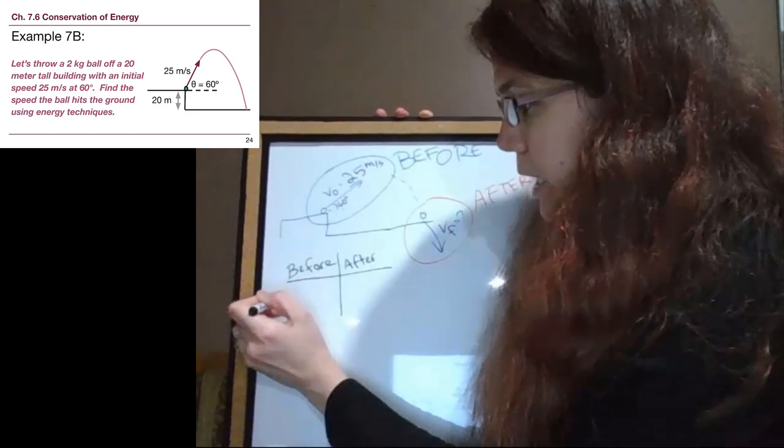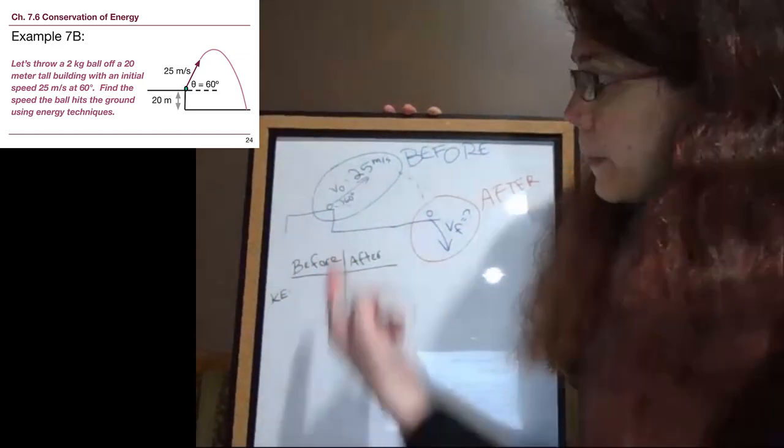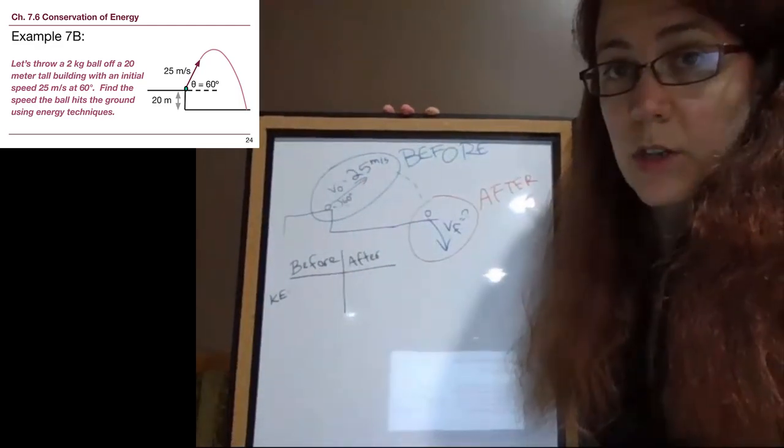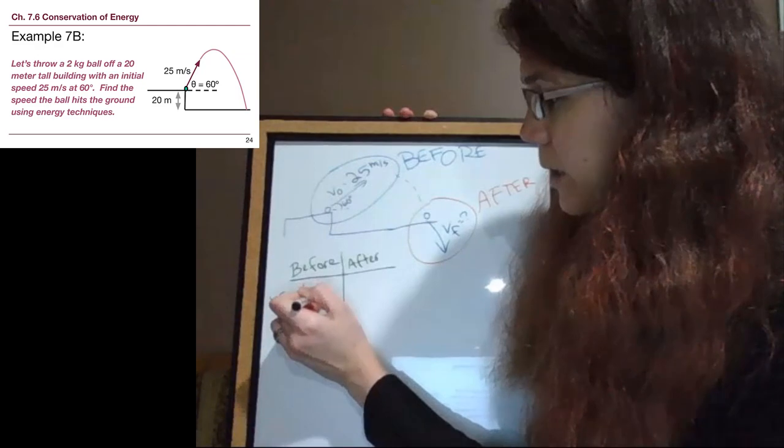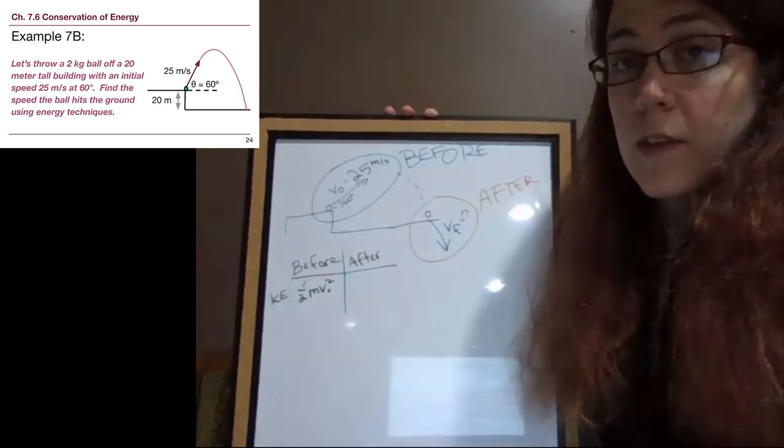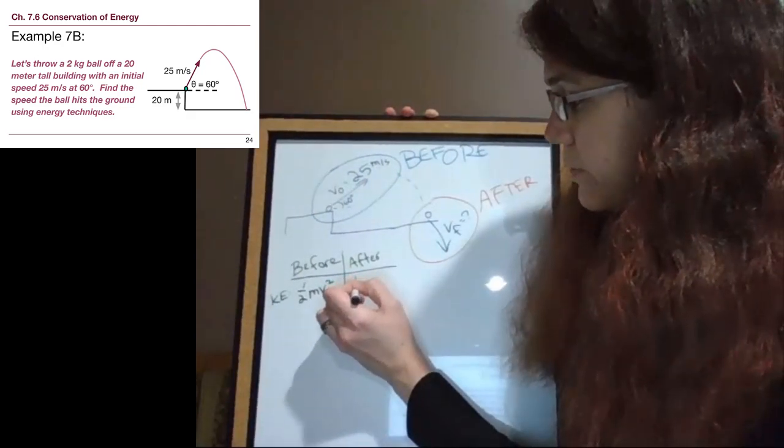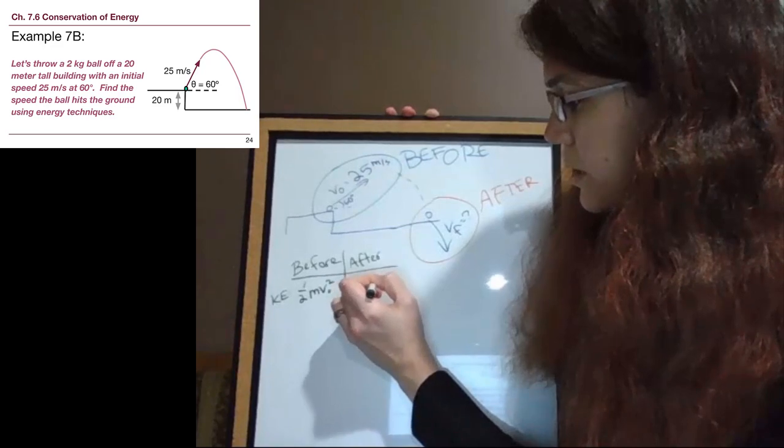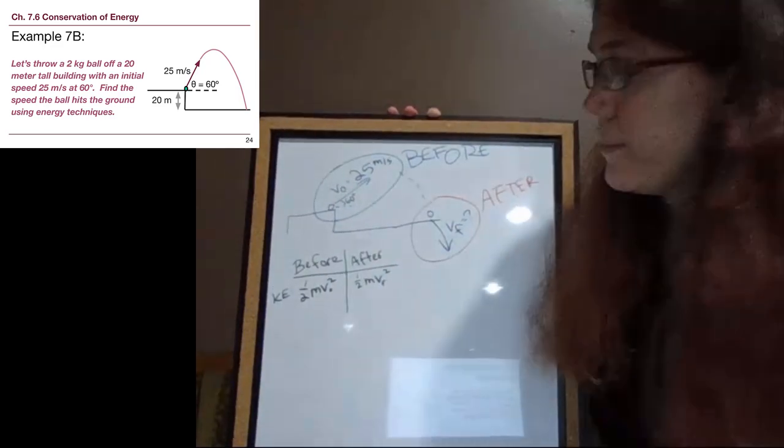So with the kinetic energy question, when we ask ourselves, are we moving? We start by asking, are we moving at the start of the problem? Yes. So we should write one half m v initial squared. And then we ask ourselves, are we moving at the end of the problem? Yes, we are. That's what we are trying to find in this problem, the final velocity there, v final squared.